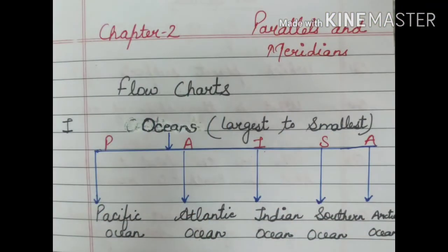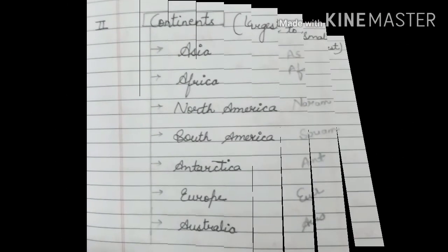Now students, you have to learn the names of these oceans and continents. I will tell you one trick to learn the names of the oceans. Learn the word PESA: P for Pacific Ocean, A for Atlantic Ocean, I for Indian Ocean, S for Southern Ocean, and A for Arctic Ocean.